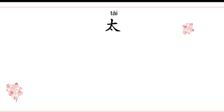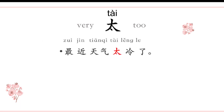The first word: 太, is an adverb. It means 'very' and 'too'. We usually use the adverb 太 together with an adjective. For example: 最近天气太冷 — it's very cold, it's too cold. 太冷了.